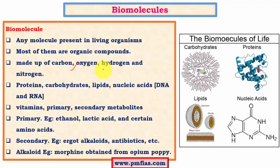Most biomolecules are made up of carbon, oxygen, hydrogen, and nitrogen. The important biomolecules are proteins, carbohydrates, and lipids — lipids are nothing but fats — and we have nucleic acids. We know about DNA and RNA, which are deoxyribonucleic acid and ribonucleic acid. Other than these major ones, called macromolecules, we have other types of biomolecules like vitamins and metabolites.